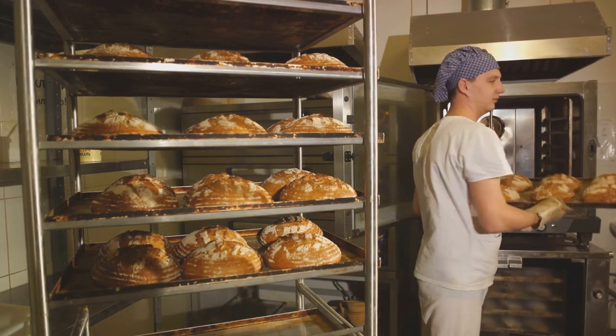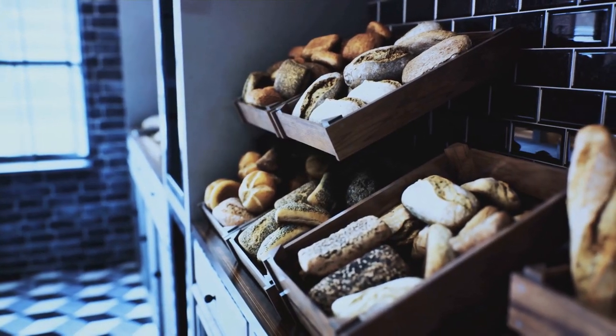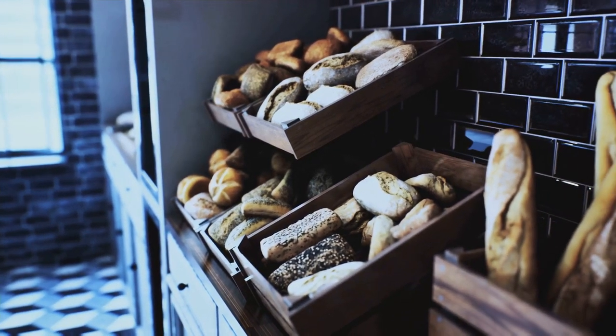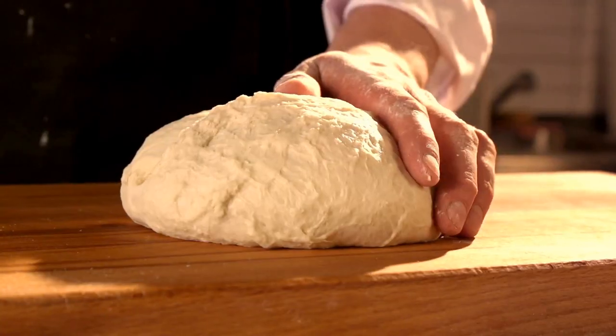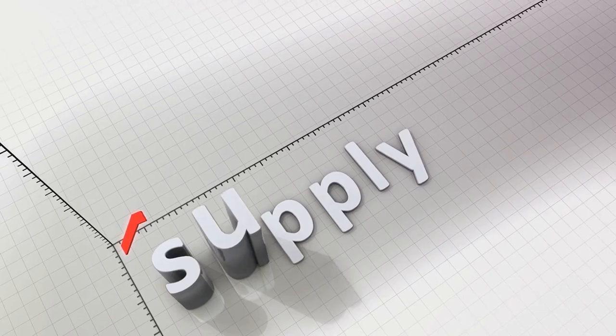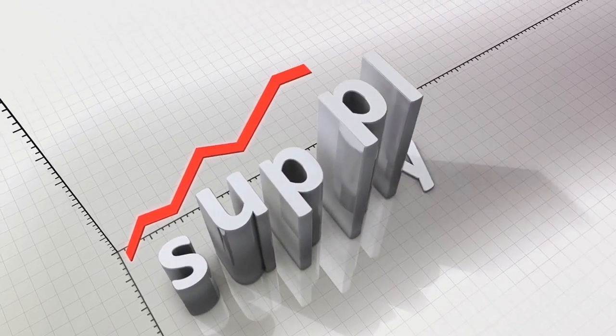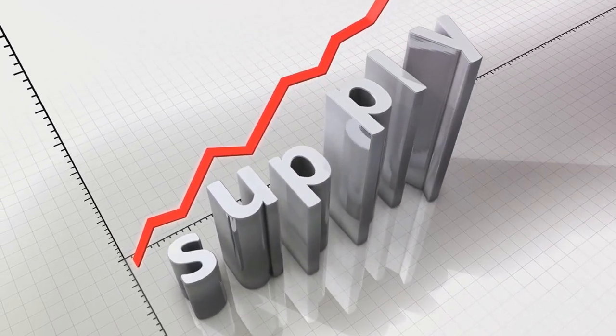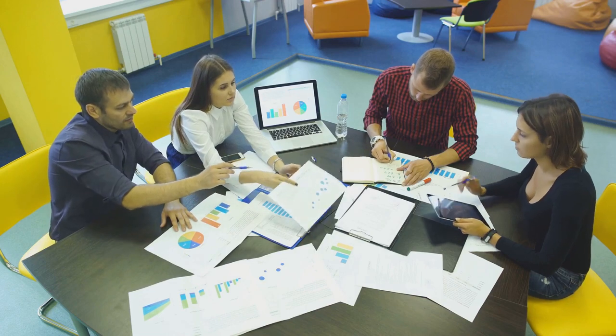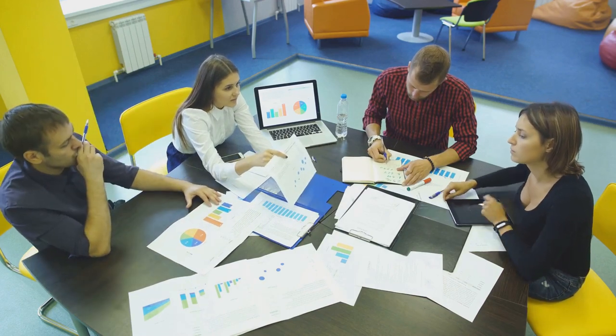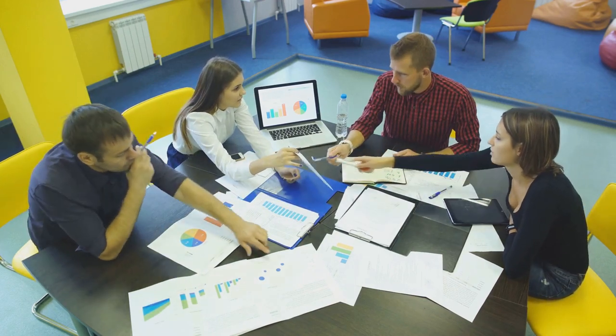Picture this: you're running a bakery. If the price of your best-selling bread doubles overnight, you'd probably want to bake more of it, right? This is the essence of the law of supply. It states that all other factors being equal, an increase in price results in an increase in the quantity supplied. In other words, if the price goes up, the quantity of goods that producers are willing and able to sell also goes up.